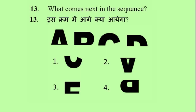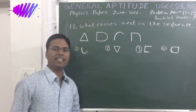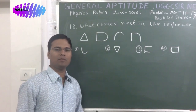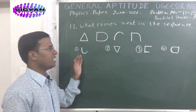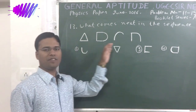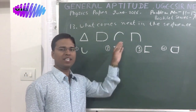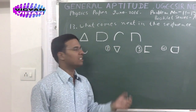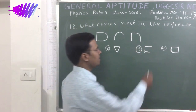Problem number 13: There are three given figures in the problem and we will have to find out the next figure in this series from the given four options — what comes next in the sequence? In the given problem there is a sequence of figures and we will have to find the next unknown figure.